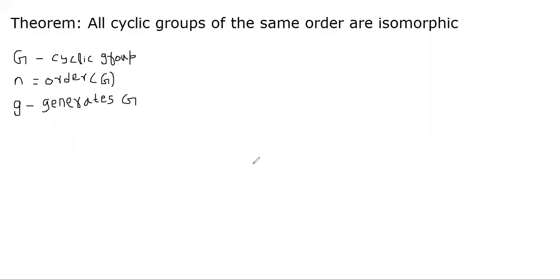Hello, welcome back. In this segment, I will prove an important theorem related to cyclic groups. It turns out that all cyclic groups of the same order are isomorphic. We will need this theorem, for example, during Diffie-Hellman key exchange. Let's get into the theorem now.